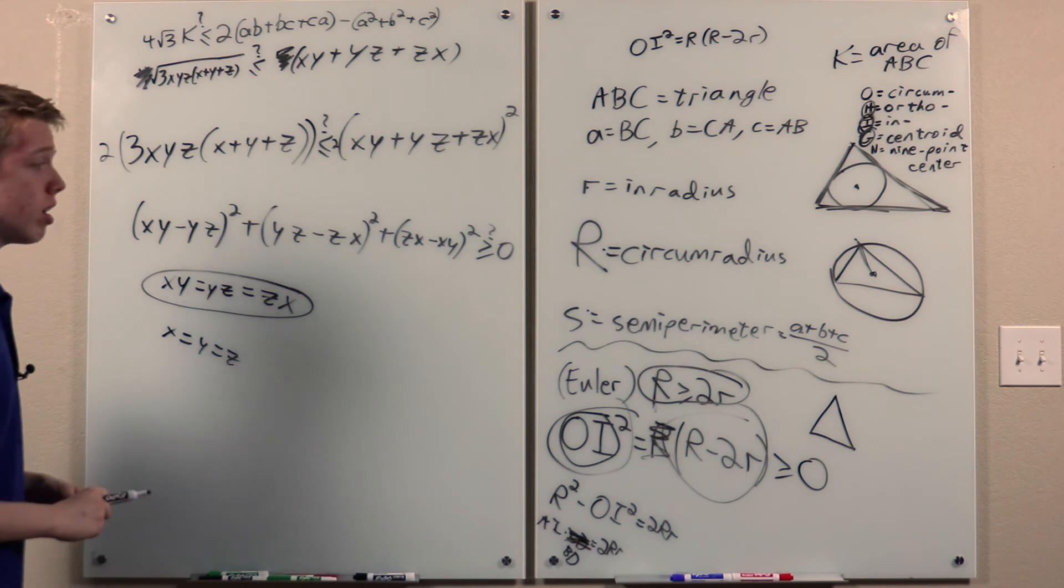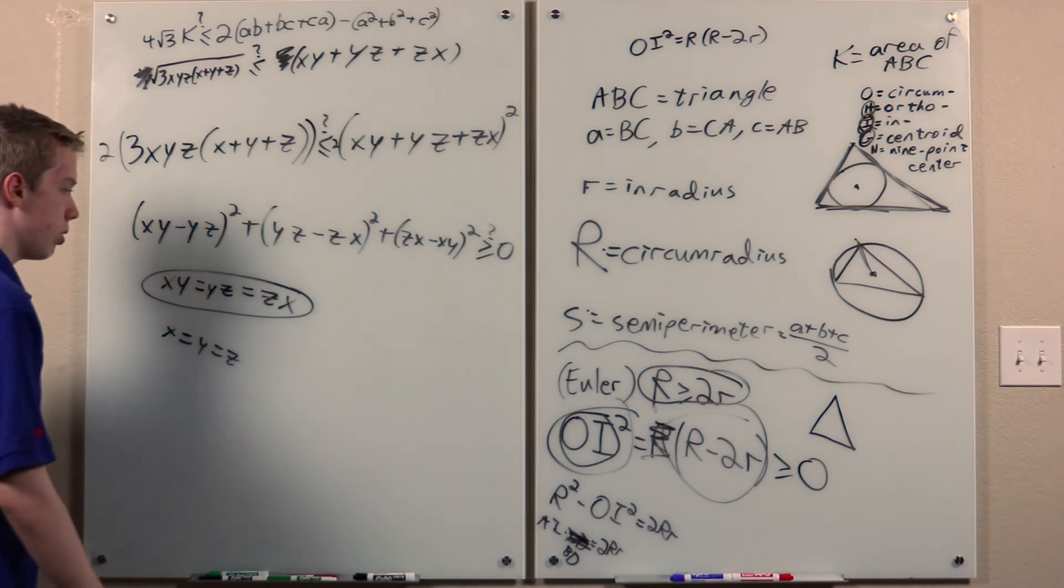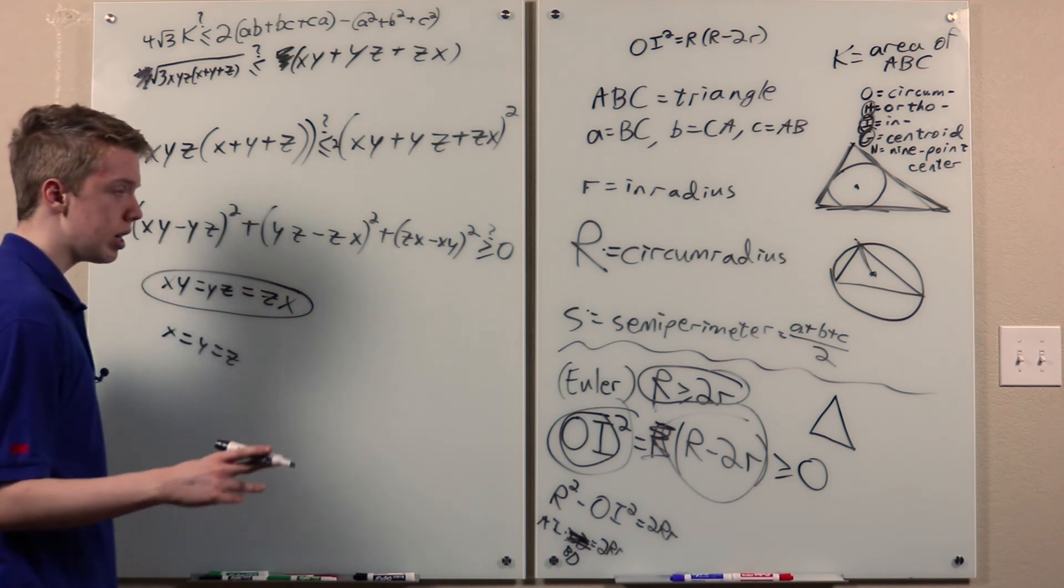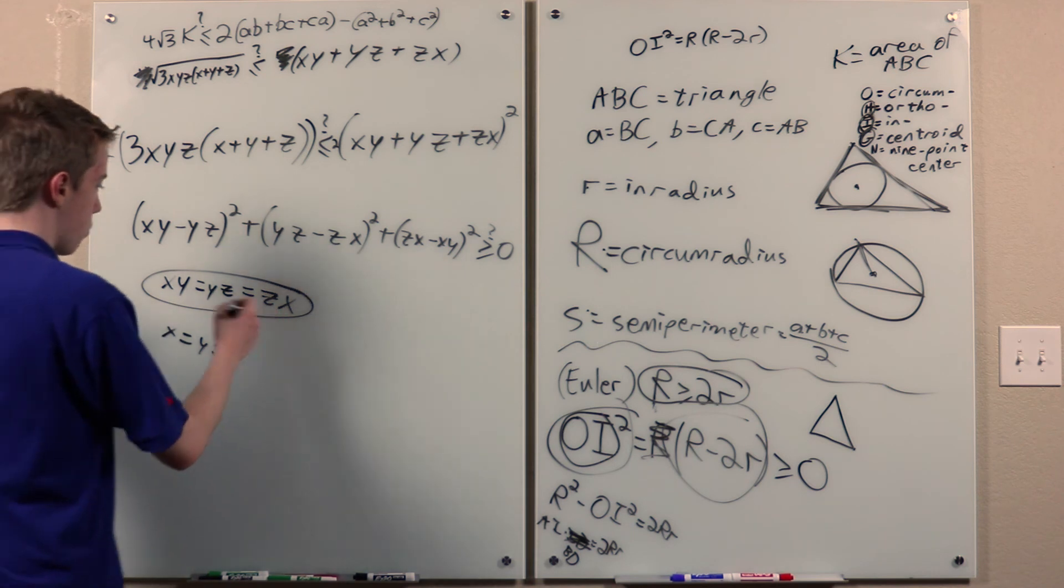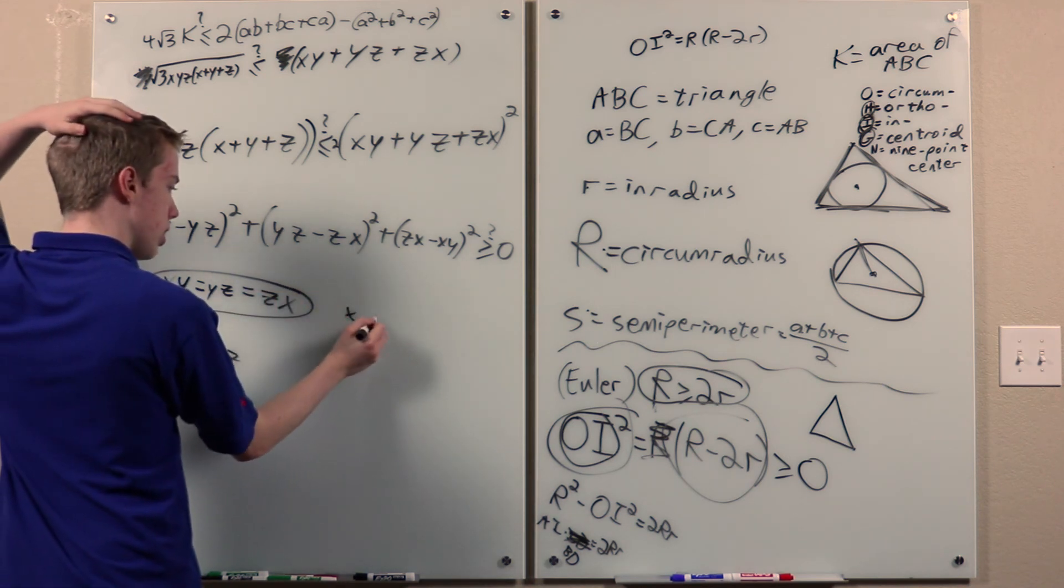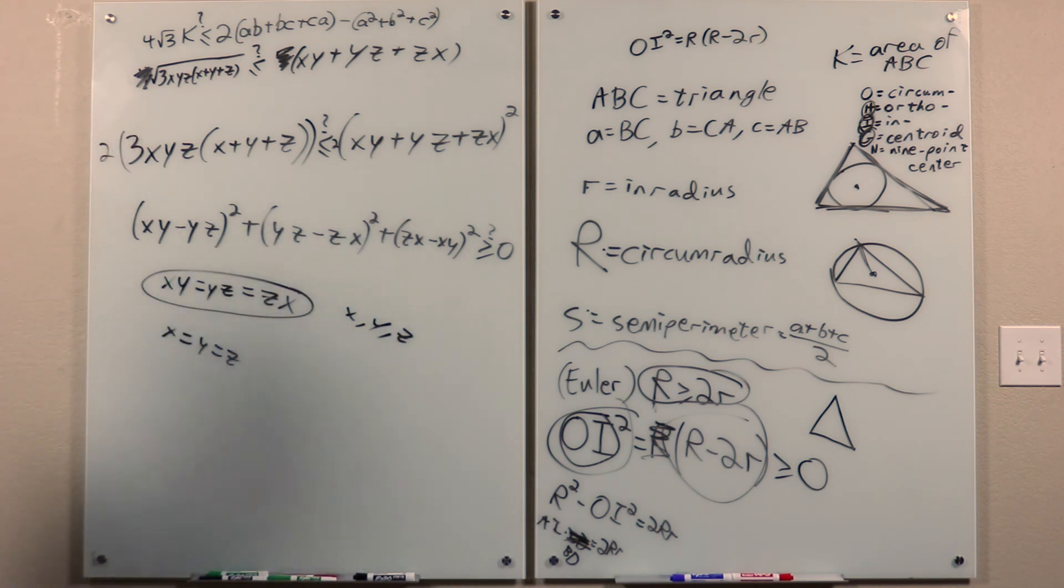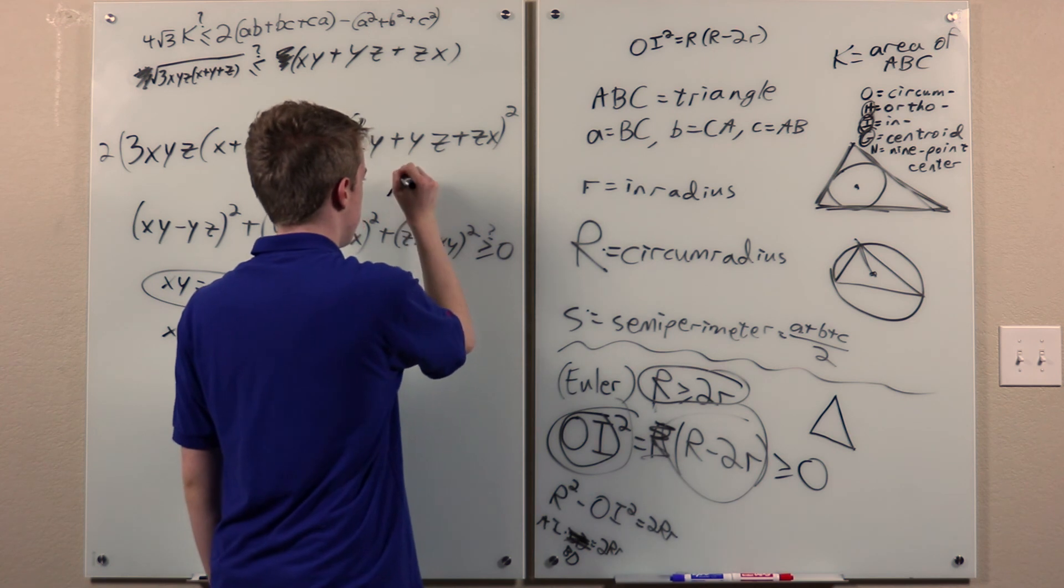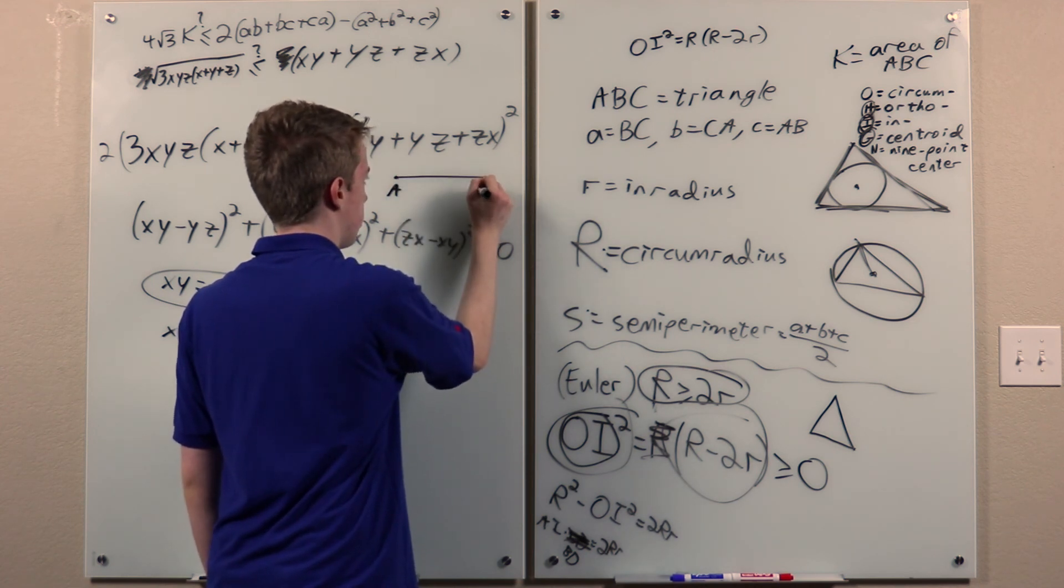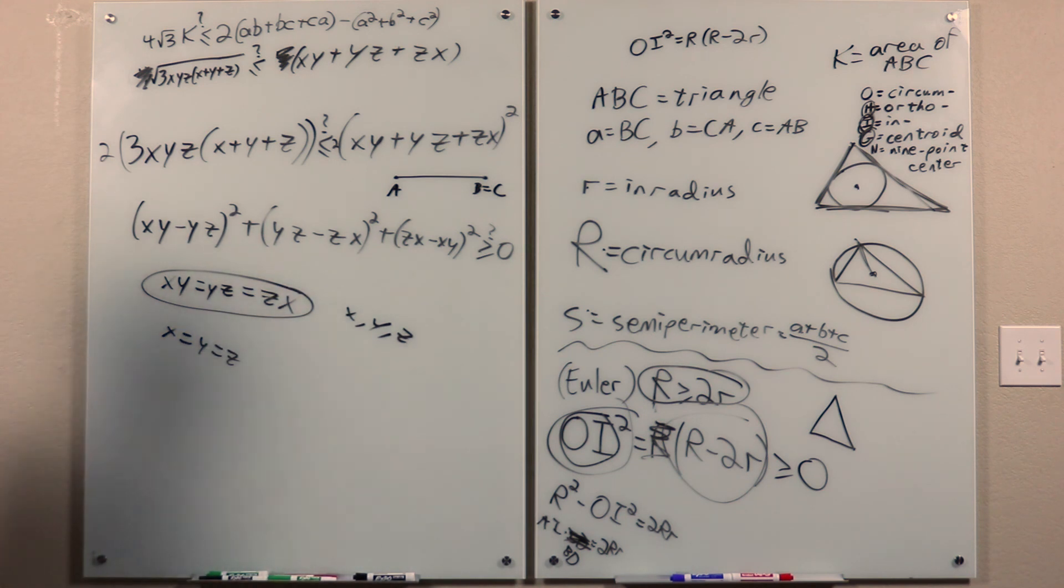We could also have a weird... Now, if the triangle is not an actual triangle, but rather, it's something where the three vertices are collinear, we can also have equality to have two of these be equal to zero, two of x, y, and z to be zero, or all three of them to be zero. Then we get a triangle that looks like this. But yeah, that's the Hadwiger-Finsler inequality.